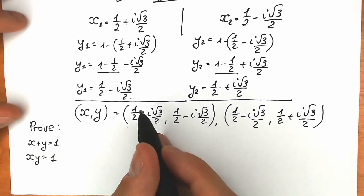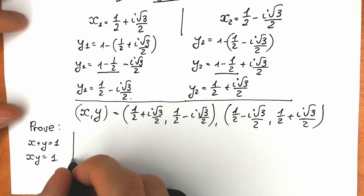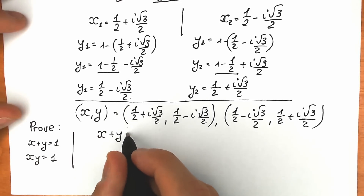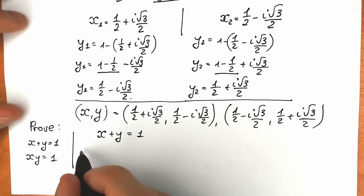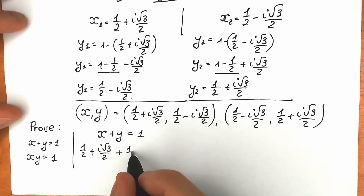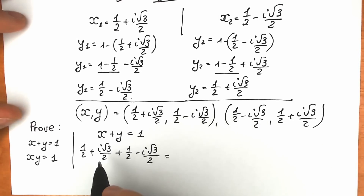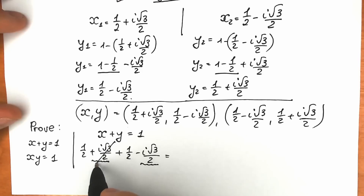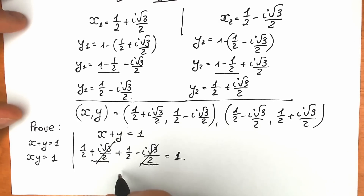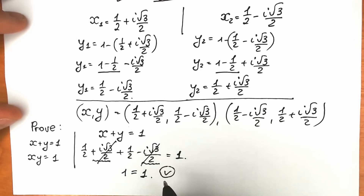Let's check x plus y equal to 1. We have (1/2 + i√3/2) plus (1/2 − i√3/2). We can cancel the imaginary parts because we have +i√3/2 and −i√3/2. So 1/2 + 1/2 = 1. We get 1 equal to 1, which is great — the first equation checks out.